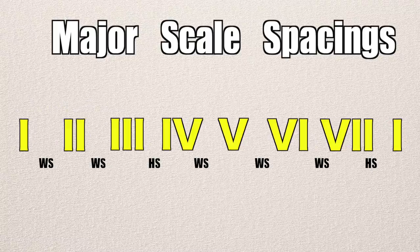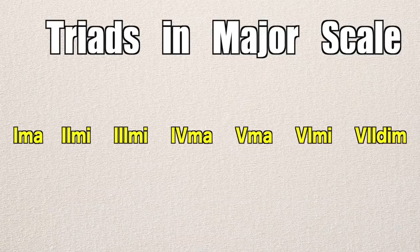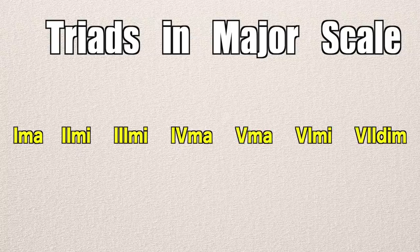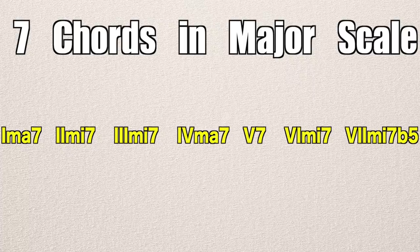So let's replace our note letters with Roman numerals — each number represents a degree of the scale. From here, we can build chords off each scale degree. We can build three-note chords, which we call triads, in which case our first chord would be major, our second minor, third minor, and so on. We can also build four-note chords, called seven chords. This pattern or sequence of chords stays the same no matter which key we're in — for example, the third chord is always minor, whether we're in the key of Eb, A, Ab, or whatever. With this information, we can build chord progressions and play melodies over top.